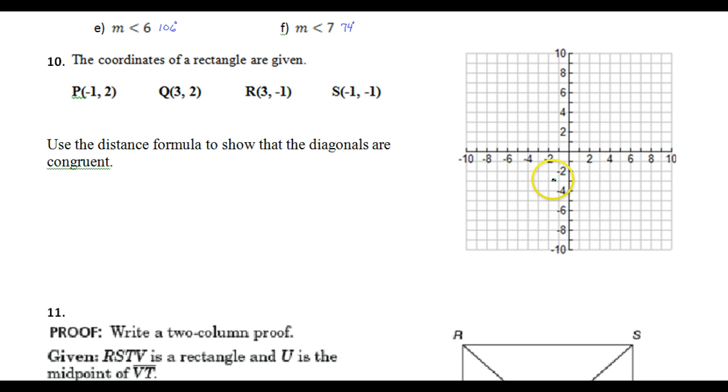We have negative 1, 2 would be right there, and that's P. And then 3, 2 would be right there, and that's Q. 3, negative 1 would be right there, and that is R. And then negative 1, negative 1 would be right here, and that is S. So clearly we have a rectangle happening. Use the distance formula to show that the diagonals are congruent.